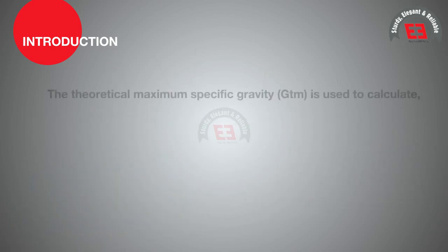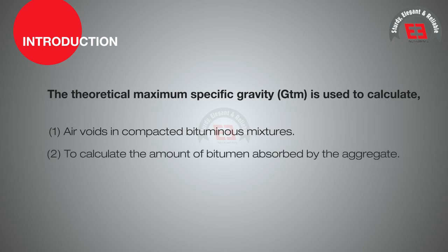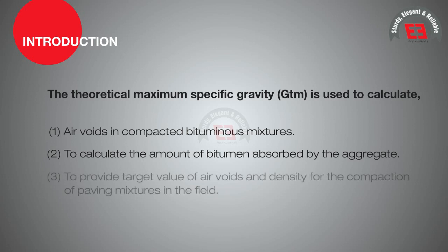The theoretical maximum specific gravity, i.e. GTM, is used to calculate air voids in compacted bituminous mixtures, to calculate the amount of bitumen absorbed by the aggregate, to provide target value of air voids and density, and for the compaction of paving mixtures in the field.